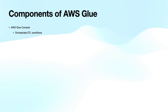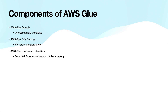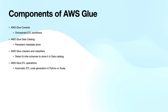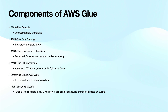AWS Glue has different components. The AWS Glue Console is used to define and orchestrate your ETL workflow. AWS Glue Data Catalog is a persistent metadata store in AWS Cloud. AWS Glue Crawlers and Classifiers allow you to define crawlers that can scan data in different repositories to detect and infer schemas, which are further stored in the AWS Glue Data Catalog. AWS Glue can automatically generate Scala or PySpark scripts for various ETL operations using the metadata in the Data Catalog. AWS Glue also enables streaming ETL on continuously running jobs, built on Apache Spark structured streaming. The AWS Glue Jobs system provides managed infrastructure to orchestrate your ETL workflow, which can be scheduled or triggered based on events.